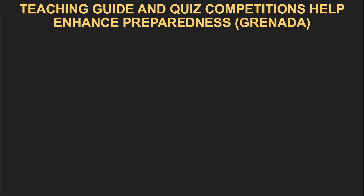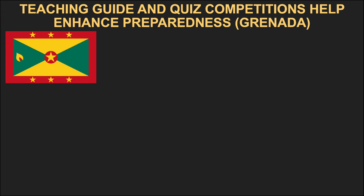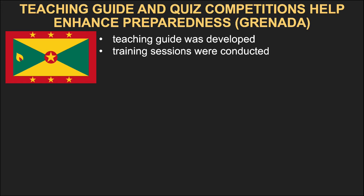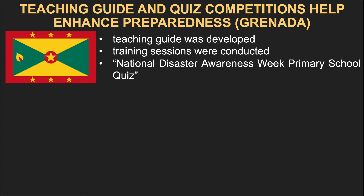The next program is the Teaching Guide and Quiz Competitions Help Enhance Preparedness from Grenada. Grenada is a Caribbean state that, like the Philippines, gets affected by tropical cyclones. Poor preparedness and response during Hurricane Ivan in 2004 indicated that the awareness and understanding of risk were insufficient in all sectors of society. Because of that, a teaching guide intended for grades 3 to 5 on disaster preparedness was developed under the joint coordination of the Ministry of Education and UNICEF in Grenada. Training sessions were also conducted to train teachers on how to prevent disasters. The Teaching Guide helped teachers organize the annual National Disaster Awareness Week Primary School Quiz, and teachers prepared their learners for the event.